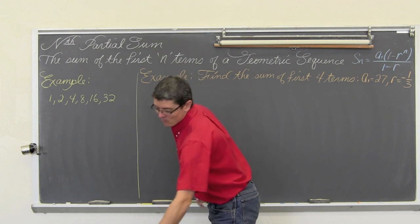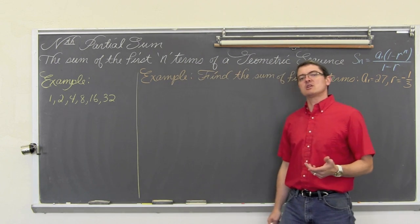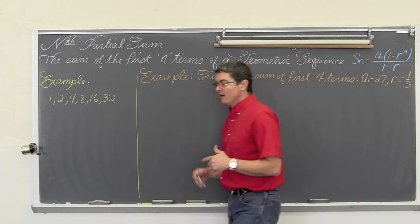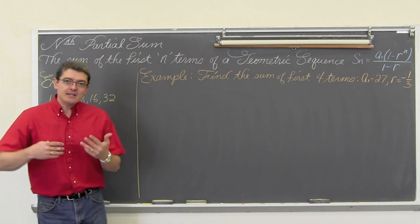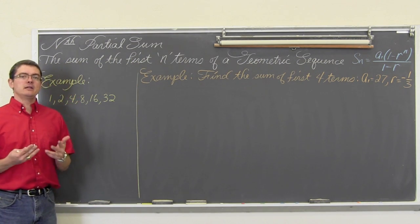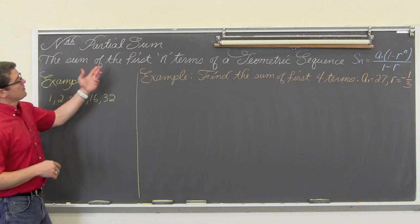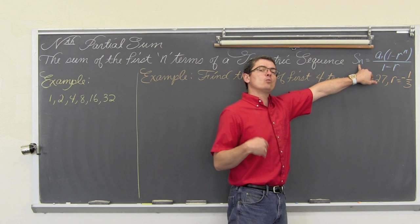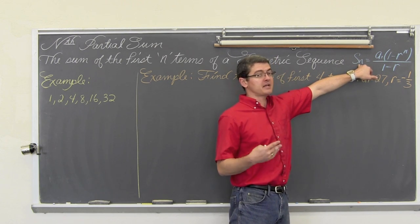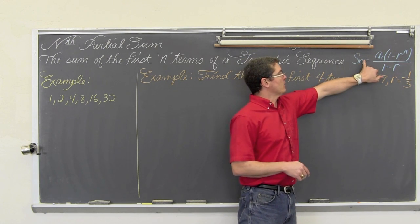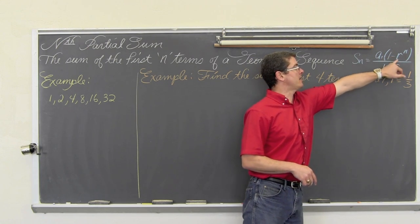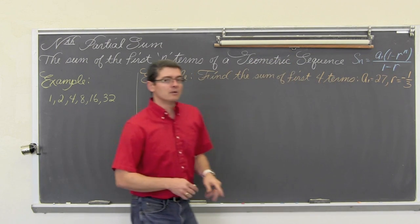I am Mr. Tarrou. We are going to continue our discussion about geometric sequences by talking about the nth partial sum. How do you add up n number of terms in a geometric sequence? The formula is s of n, where n denotes where you are in the sequence. That is equal to a sub 1 times 1 minus r to the n over 1 minus r.